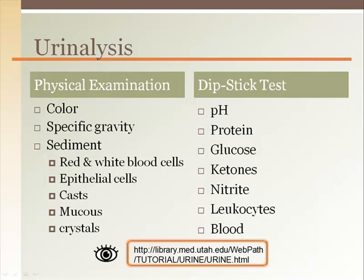Urine also contains sediment. To evaluate the sediment, the urine must be spun in a centrifuge and the liquid must then be removed. The remaining sediment can be put on a microscope slide for evaluation. Some of the sediment may include red blood cells, which may or may not indicate a problem. White blood cells, if numerous, indicate an infection. Casts are odd-shaped mucus and protein conglomerations with other materials adhered to them, formed in the distal convoluted tubule. There are many different types of casts. Only long, cylindrical, hyaline casts are found in healthy patients; other cast types are often associated with a particular pathology.